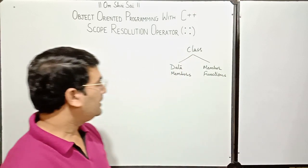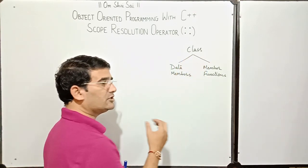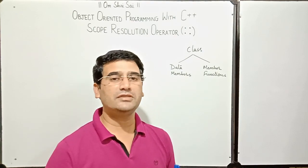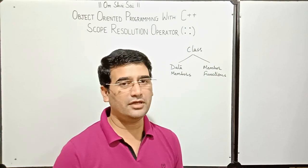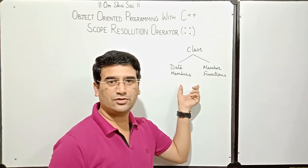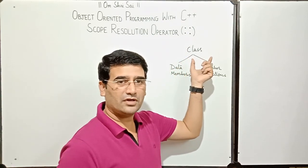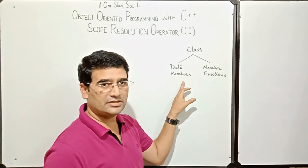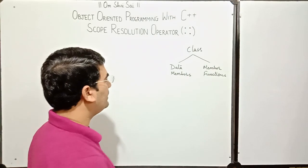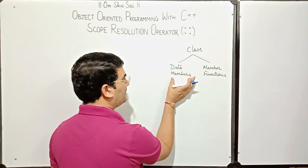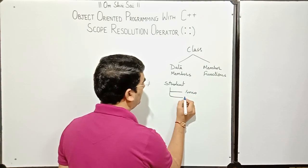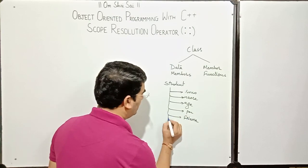What does it mean? This means that whenever we define a class, we include only the amount of important data members or properties. If they don't have important properties, they will not be defined in the class. For a student class, there may be different types of members: role number, name, age, percentage, father's name, mobile number, and so on.